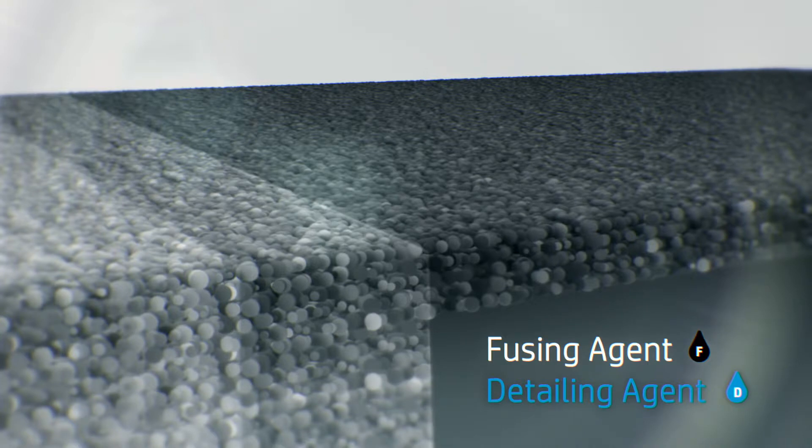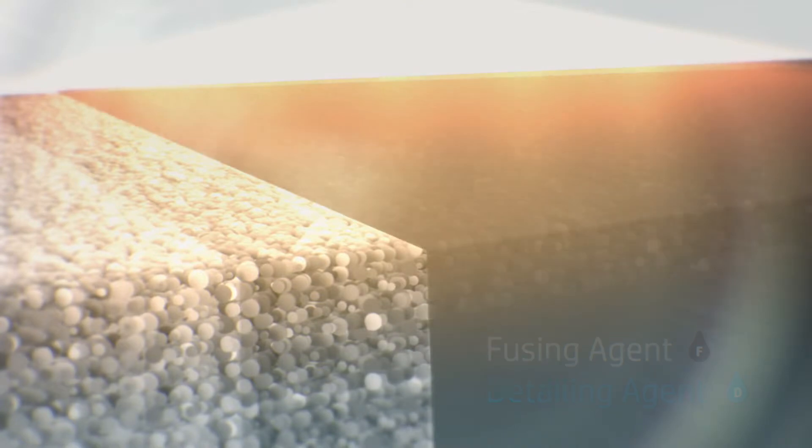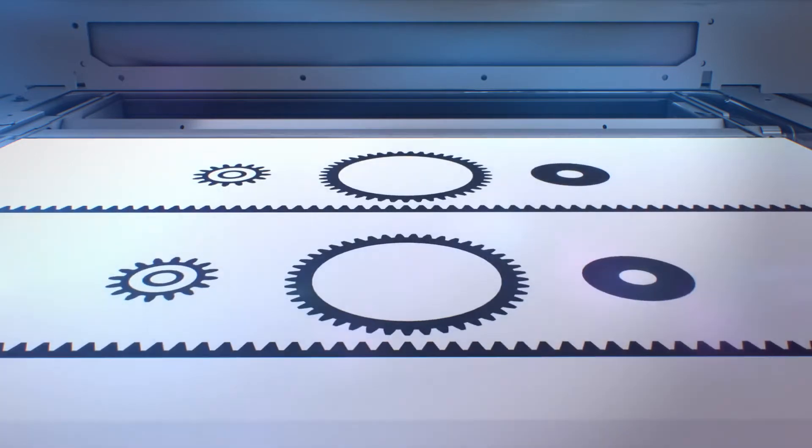The area is exposed to energy and reactions between the agents and the material cause the material to selectively fuse together to form the part. The fusing process requires accurate temperature control across the entire material layer.